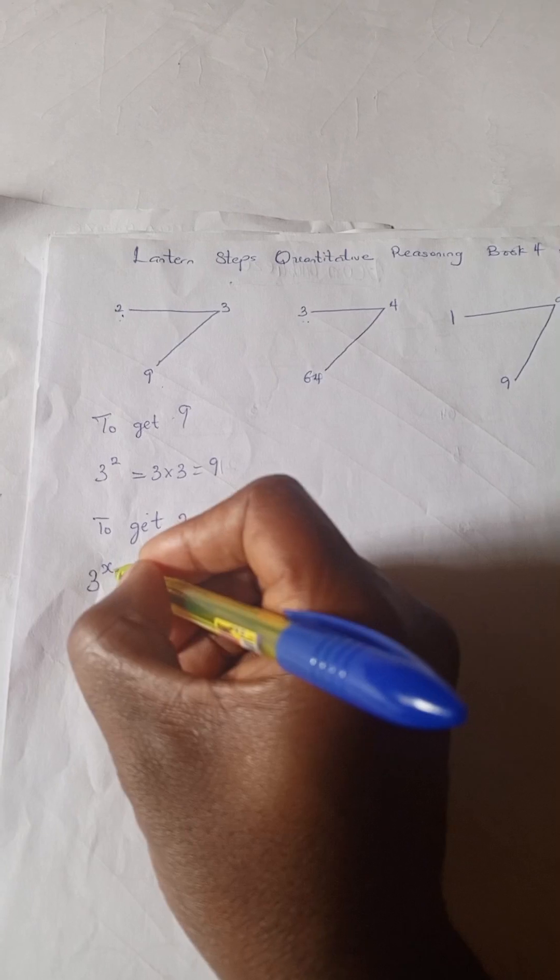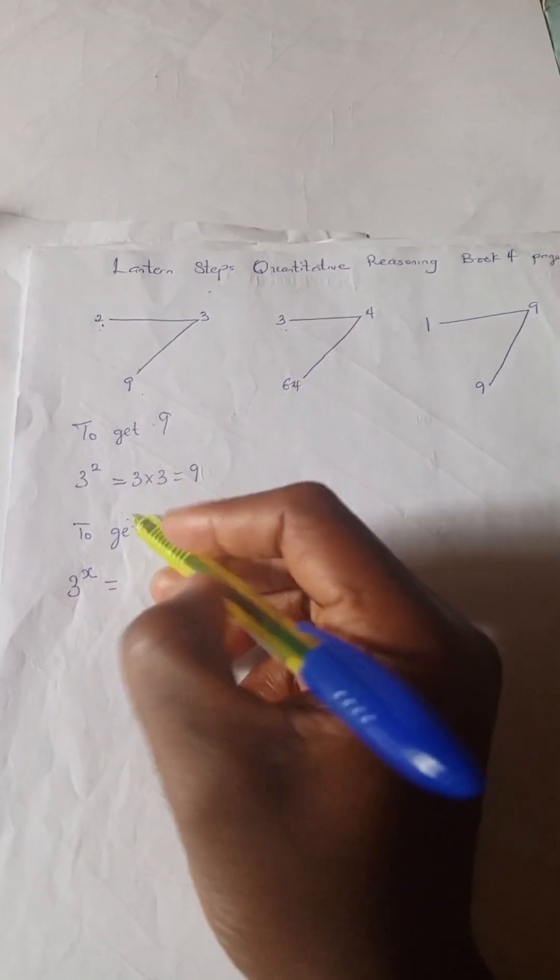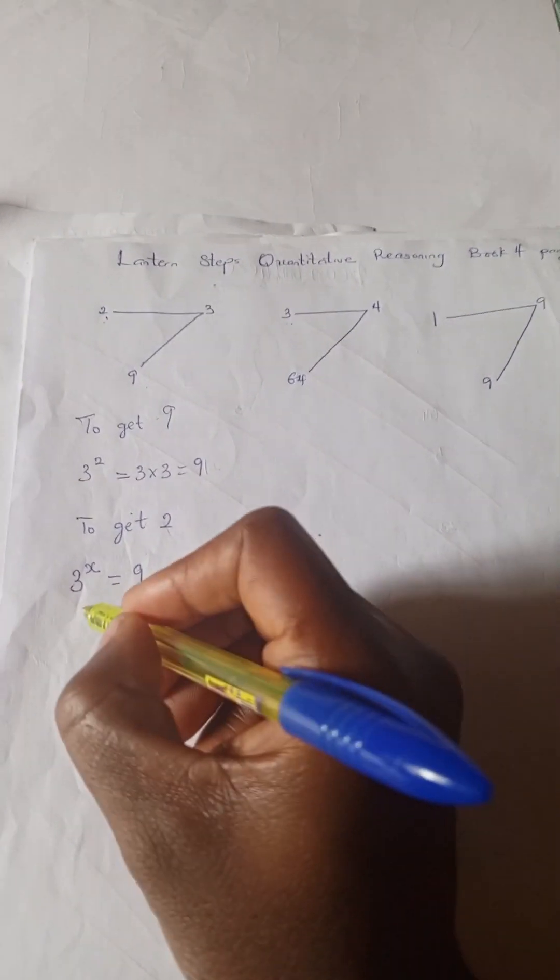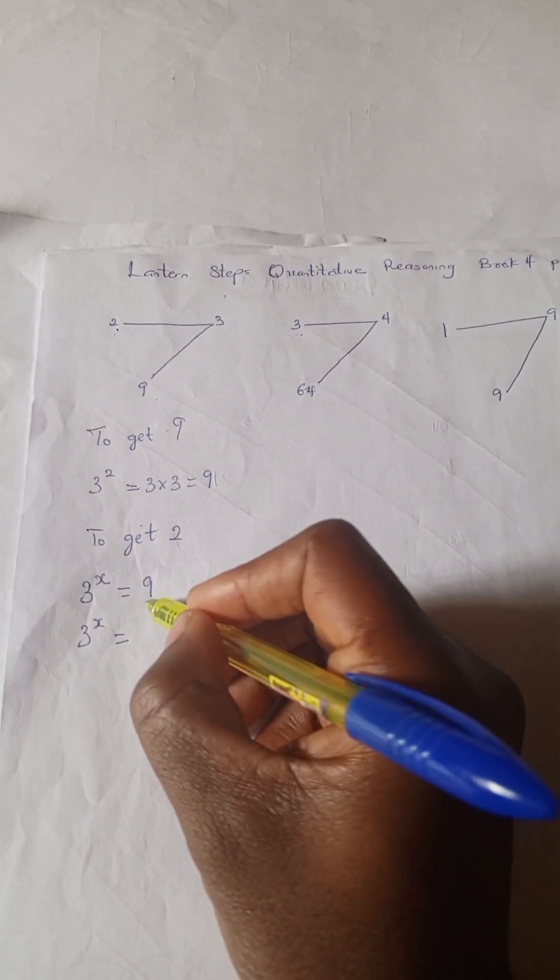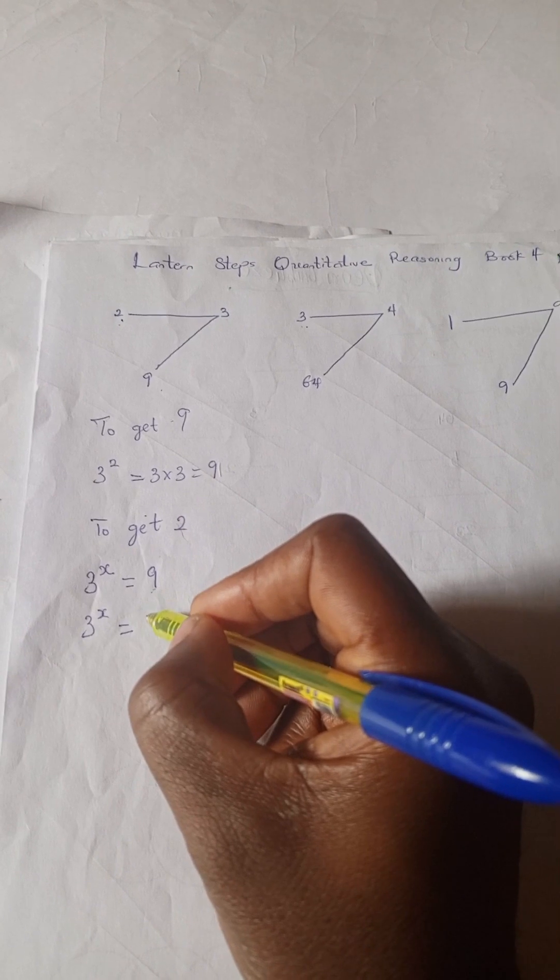So let's get 2. Now remember the first rule, 3 to the power of 2, isn't it? So 3 to the power of an x we do not know gives us 9. So 3 to the power of let's make this 9, let's convert this.